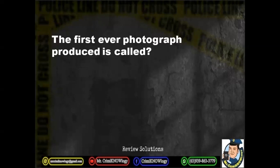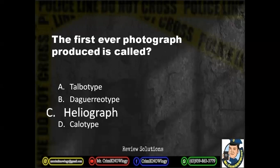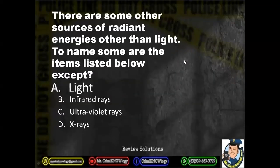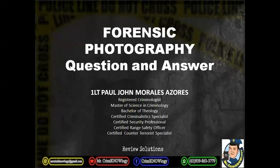The first ever photograph produced is called: A. Talbot type. B. Daguerreotype. C. Heliograph. D. Calotype. The correct answer is heliograph — this is the first ever photograph produced, which required 8 hours of exposure. Those are the different questions for us to exercise in recalling our course, Forensic Photography.